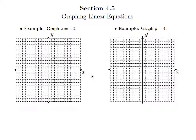In this lesson, we're going to look at a couple of simple yet strange-looking examples. The first one says graph x = -2, and the other one says graph y = 4. These are so simple that they might even be a little bit confusing.